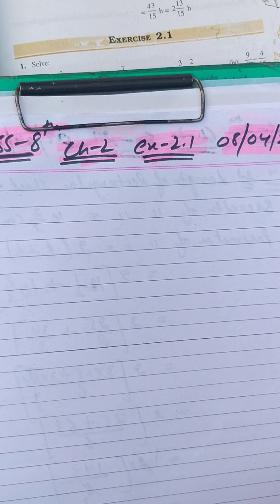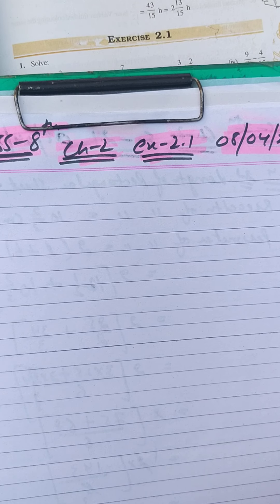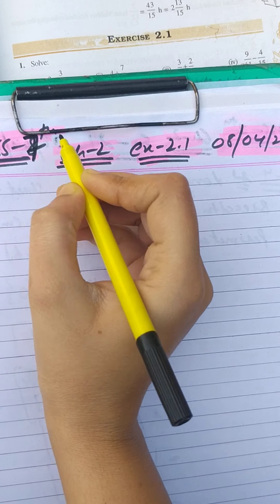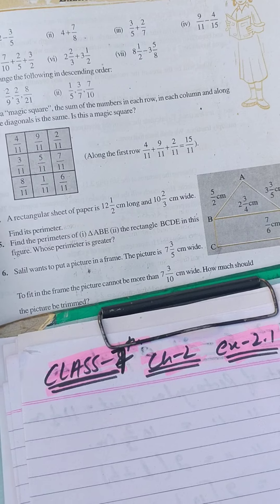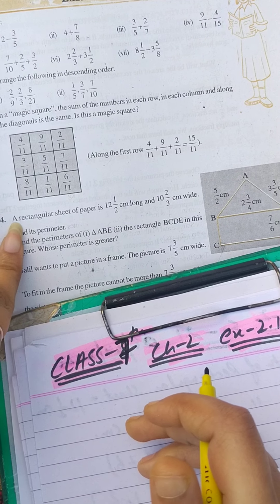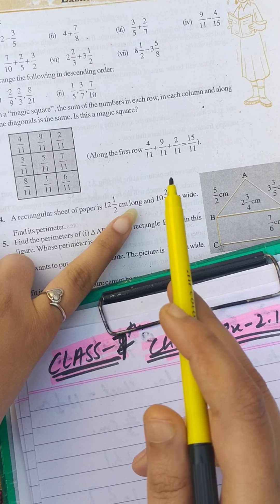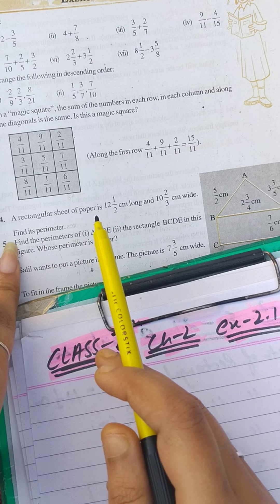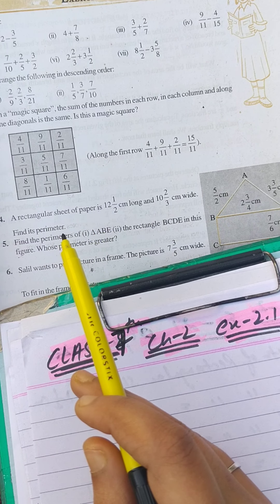Hello students, today we are going to do question number 4 from exercise 2.1. The chapter name is Fractions and Decimals of Class 7. Question number 4 states: a rectangular sheet of paper is 12 and 1/2 centimeter long and 10 and 2/3 centimeter wide. Find its perimeter. They have given us length and breadth, and the sheet is in the form of a rectangle.